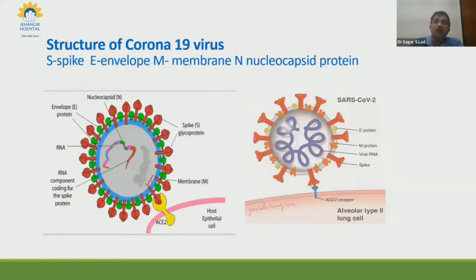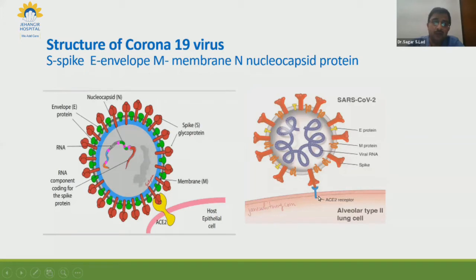We all know the structure of the virus; what we are interested in is the spike protein. This spike protein is important when it attaches to the ACE receptor, and because of this attachment, all the nucleocapsid material of the virus enters into the cell. The cell gets infected and it causes dissemination of the virus in the body. So we are most interested in this spike protein.